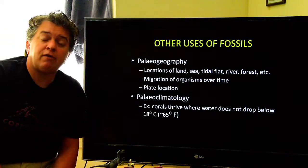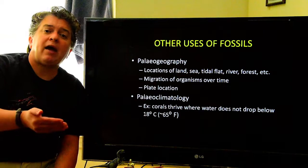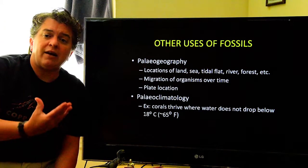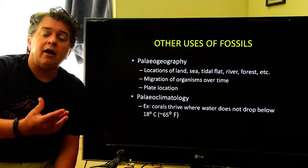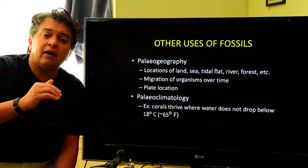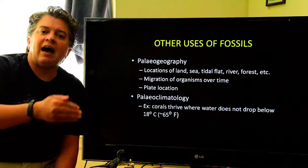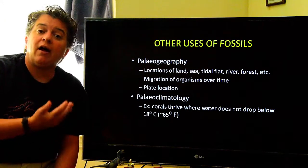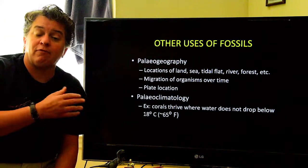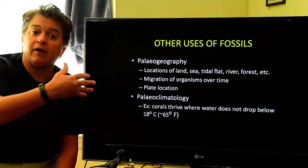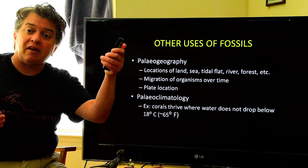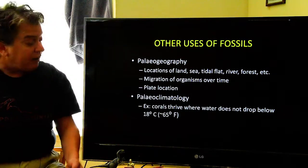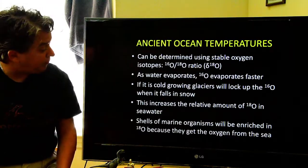Your typical corals thrive where you have warm water and the water temperature does not drop below 18 degrees Celsius, or about 65 degrees Fahrenheit. In the past, when the climate was much warmer than it is today, corals actually lived at higher latitudes than they do now, because it was warmer farther north and farther south, closer to the poles. So corals had a wider range than they do now because of the temperature.